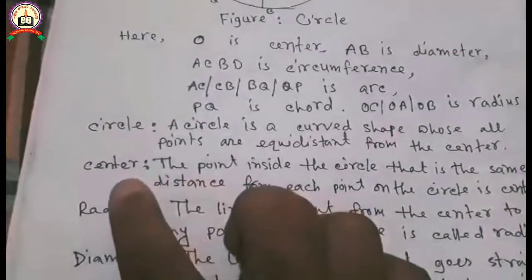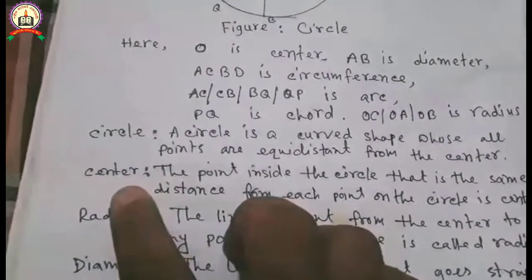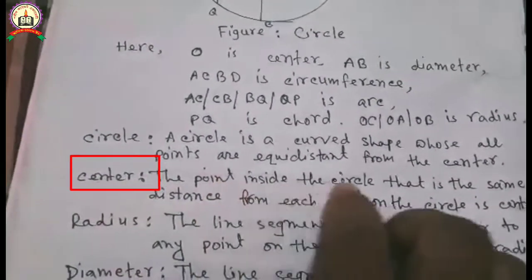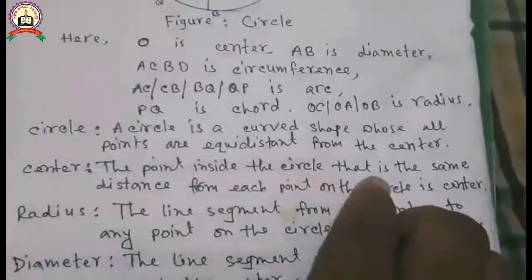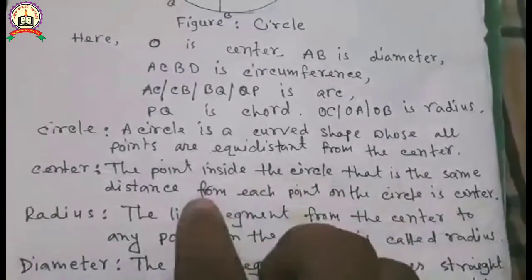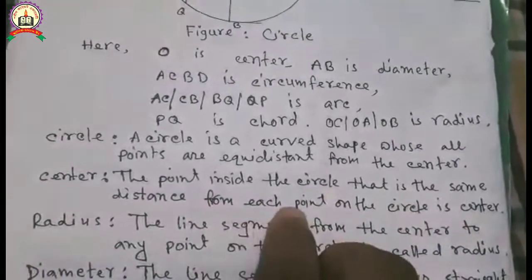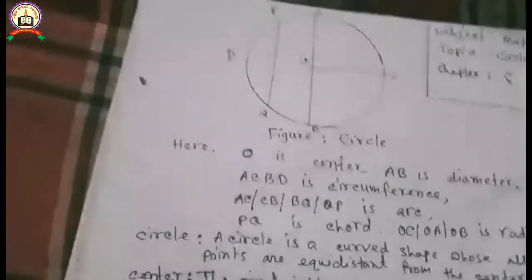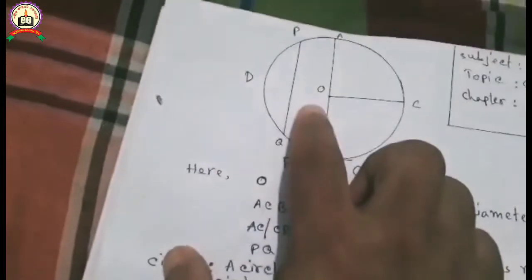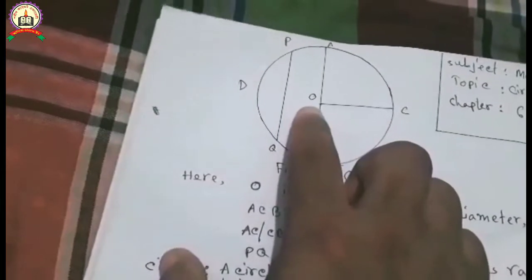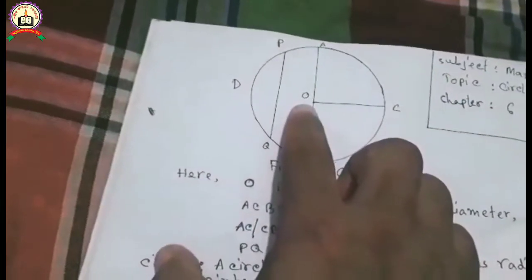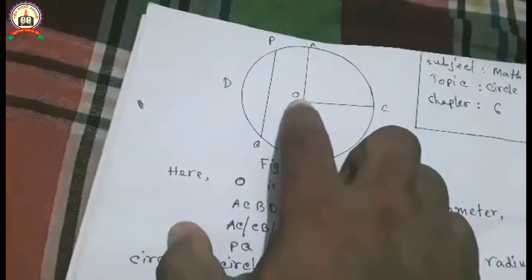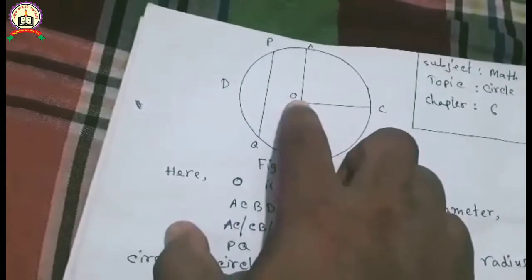Center. The point inside the circle that is the same distance from each point on the circle is the center. Here, O is the center, and all points from center O are equidistant.